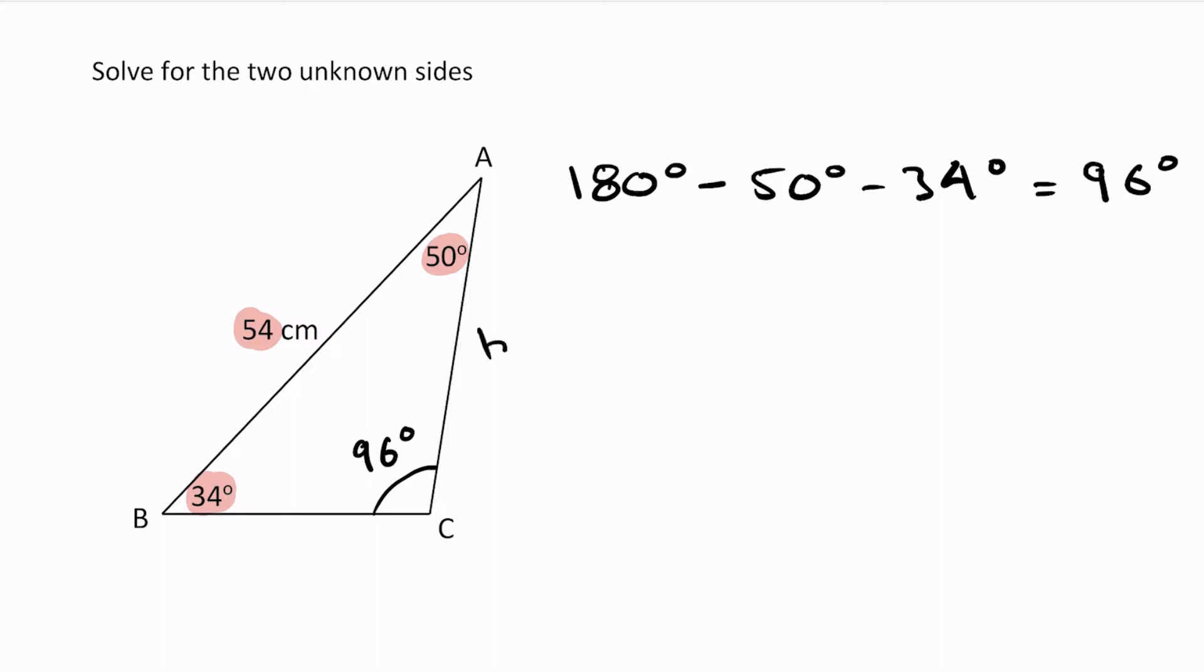Now we're trying to solve this triangle for the unknown sides. I'm going to call this side b lowercase because it's opposite angle B. I'm going to call this side a lowercase because it's opposite angle A.